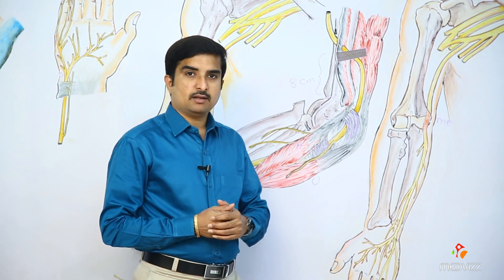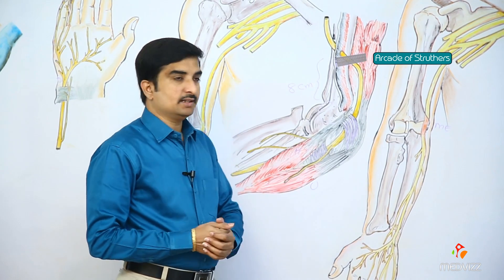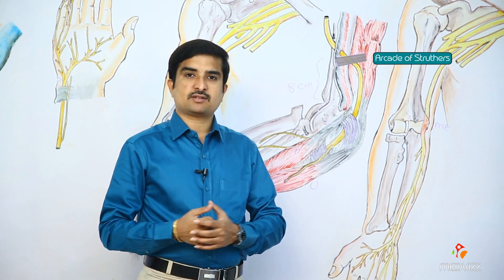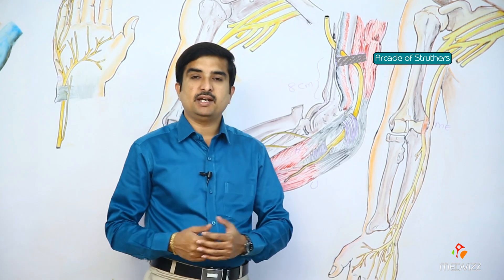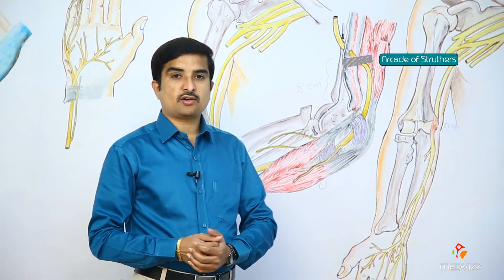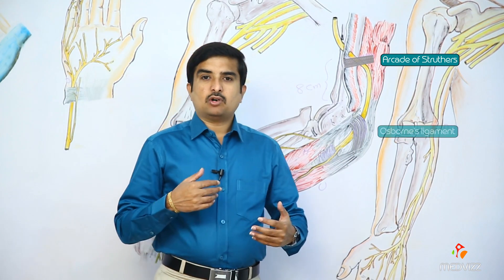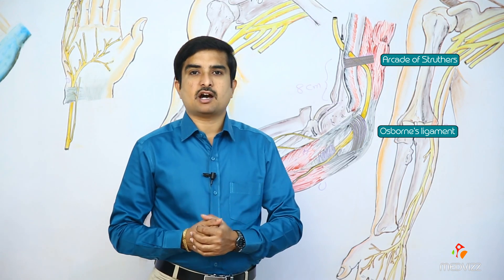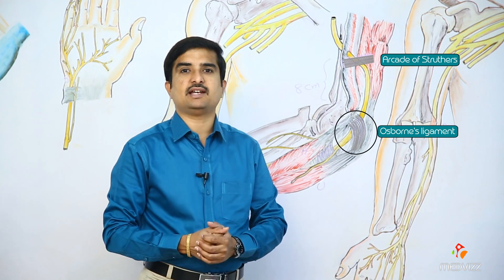Injury may also be common at the arcade of Struthers, which is the aponeurotic band exactly at the middle of the arm connecting the medial head of the triceps as well as the medial intermuscular septum. Another location is between Osborne's ligament and the medial collateral ligament, exactly at the cubital tunnel. These are the three main sites of ulnar nerve injury.